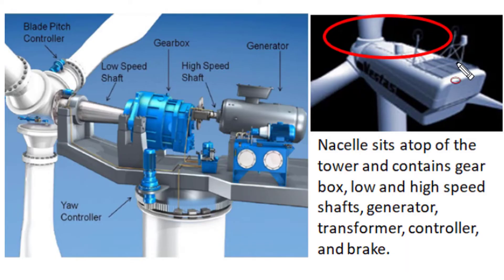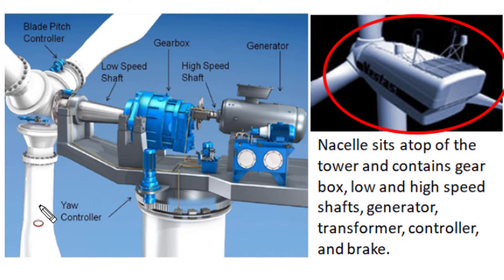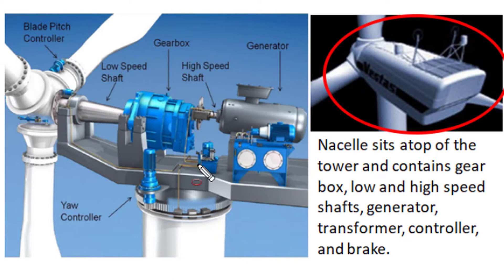The nacelle is the main power center of the wind turbine generator — all energy conversion takes place within this nacelle. It sits on the top of the tall wind turbine tower. On one side of the nacelle, turbine blades are connected to the hub. These turbine blades collect wind energy and convert it into angular rotational motion of high torque and low RPM — typically 10 to 15 revolutions per minute. A gearbox converts this low-RPM, high-torque rotation into a convenient 1000 RPM high-speed rotation for the generator shaft.